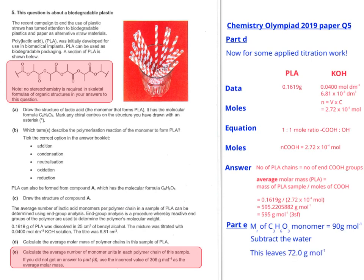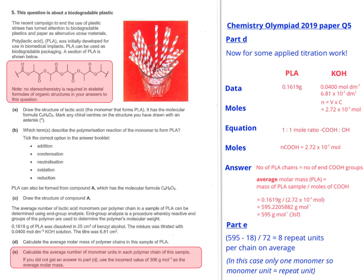So you subtract the water, and this leaves 72 grams per mole. So subtracting 18 from the original 595, because obviously there's a water molecule formed every time a chain is formed, then that leaves us dividing that by 72, which is the remaining monomers, each monomer minus the water as well, being 72. That gives us 8 repeat units per chain on average. The repeat units in polymers doesn't always necessarily mean one monomer. In this case, one monomer unit equals one repeat unit, because there's only one monomer present in the first place.